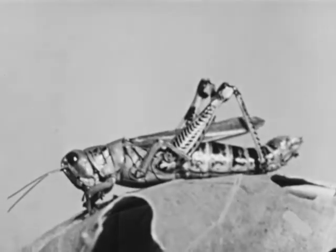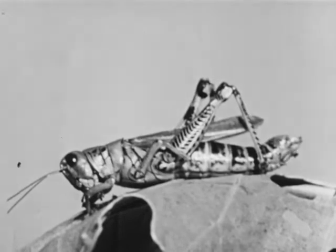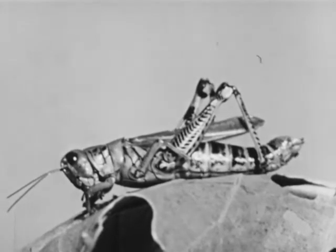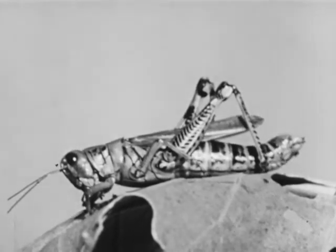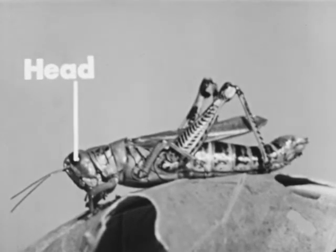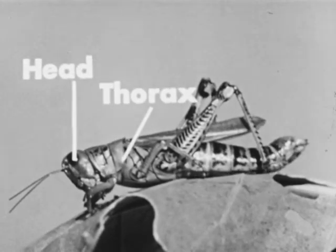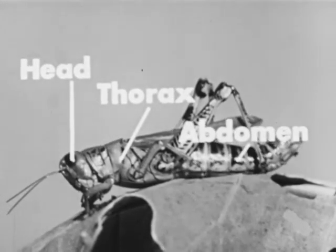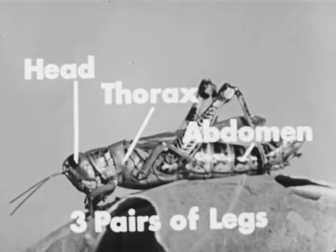Let's look first at the basic body structure of the grasshopper. Like all insects, it has a head, thorax, abdomen, and three pairs of legs.